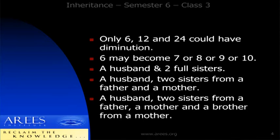We will take one case at a time, starting with diminution applied to all shares together. If you remember, the original cases are 2, 3, 4, 6, 12, and 24. Diminution applies only to three of those: 6, 12, and 24. If you apply diminution to 4 or to 3, your answer is incorrect. If you have a case out of 2 or 3, there cannot be any diminution. It is only applicable to cases out of 6, 12, and 24.